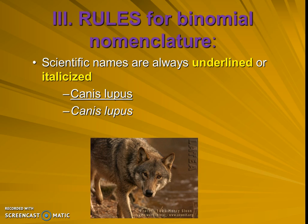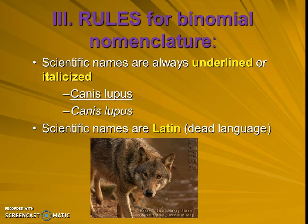Another rule for binomial nomenclature: scientific names have to be Latin. That's for a particular reason — it's a dead language. What if we picked something like English, which is always changing? We get new words like Google, Muggle, and Instagram all the time that didn't used to exist. The dead language helps us make sure that names won't change, so that scientists will forever be able to talk about Canis lupus and it will always mean the same thing to everyone across the board — whether in China, America, or Africa, we all have the same scientific name, and it won't change.